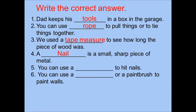Number five: You can use a blank to hit nails. Number six: You can use a blank or a paint brush to paint walls. What is the correct answer? The correct answer is roller. Please repeat after teacher: You can use a roller or a paint brush to paint walls.